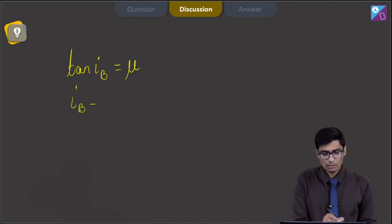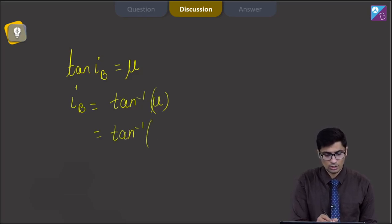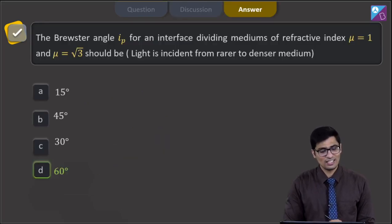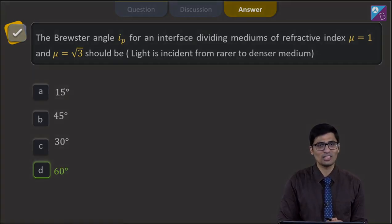Now, furthermore, we can write down that IB will be equal to tan inverse mu which can be written as tan inverse root 3. Now, tan inverse root 3 has a value of 60 degree. So, for this question, the answer is option D that is 60 degree. Moving on to the next question.